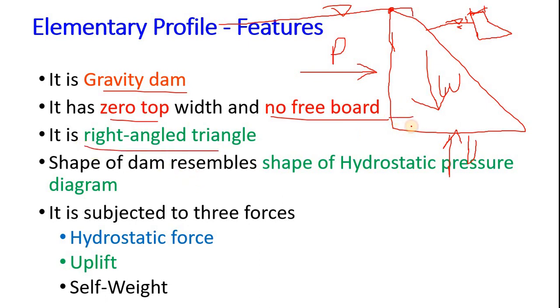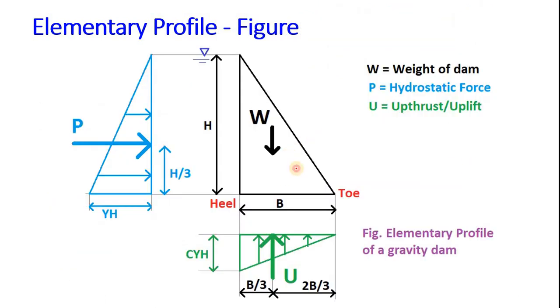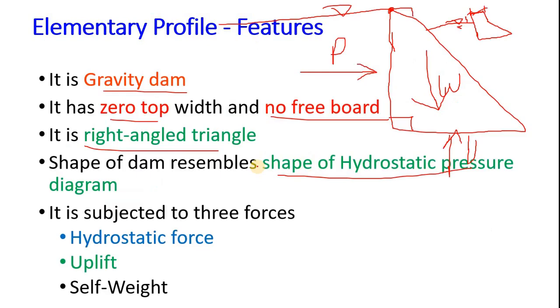Shape of dam is right angle triangle and it resembles the shape of the hydrostatic pressure diagram. You can see here this is the elementary profile dam and this is the hydrostatic pressure diagram. Both figures resemble. Now it is subjected to three forces as we already said: hydrostatic force, uplift force and self weight.